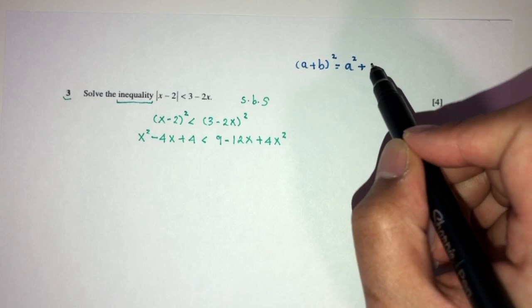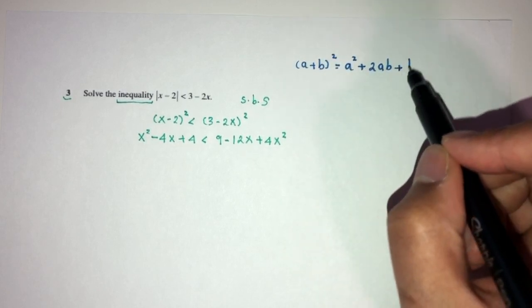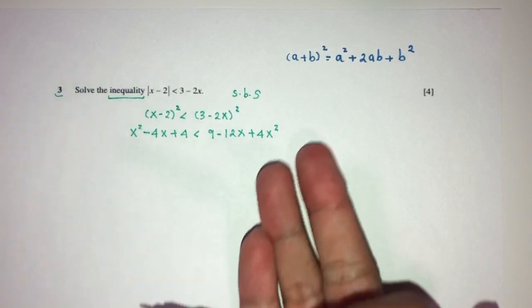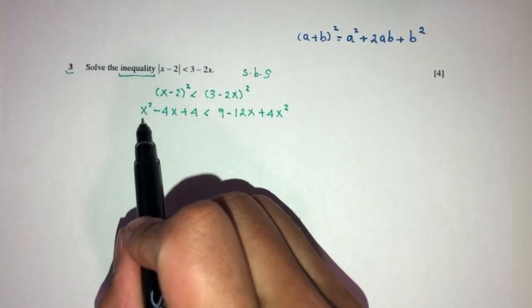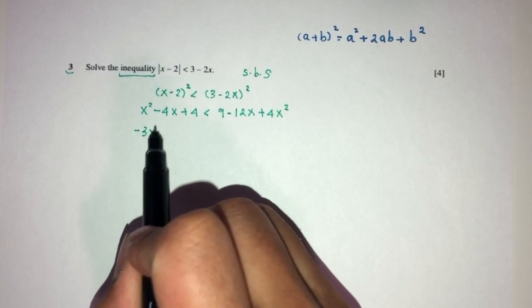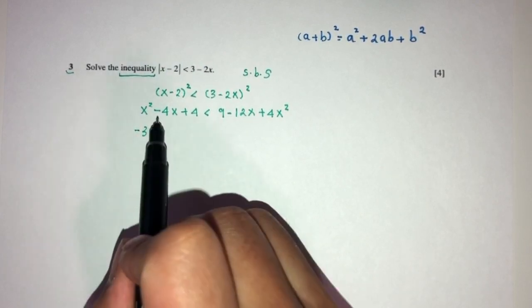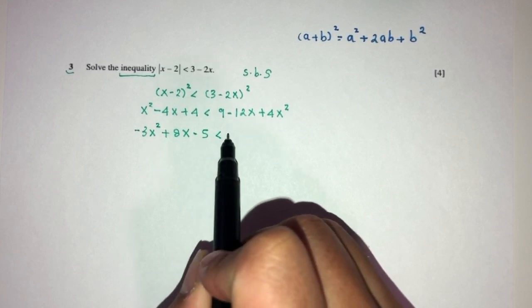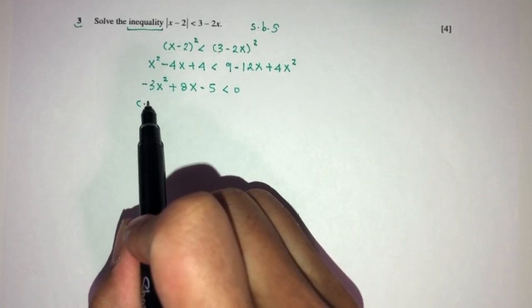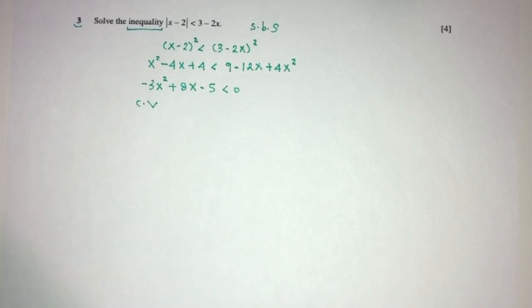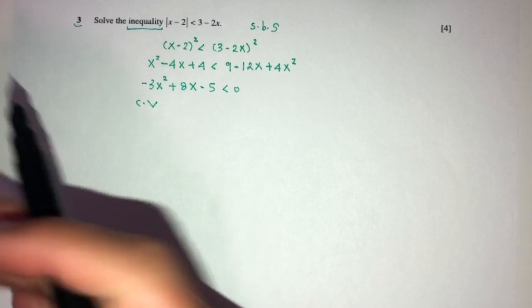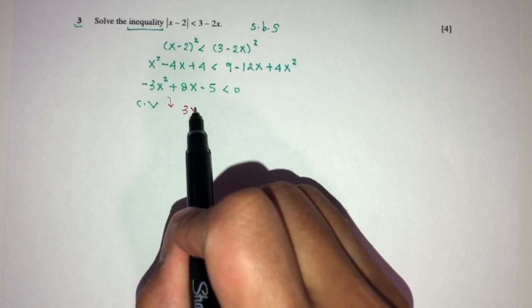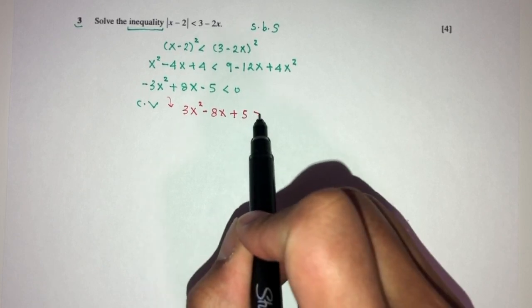Bringing everything to one side: x² − 4x² = −3x², −4x + 12x = +8x, and 4 − 9 = −5. So we have −3x² + 8x − 5 < 0. To avoid working with a negative leading coefficient, multiply through by −1 and flip the inequality: 3x² − 8x + 5 > 0.